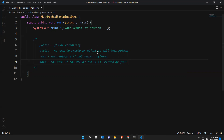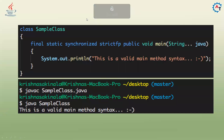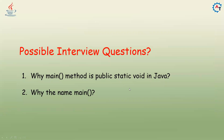Possible interview questions from this topic: why is the main method public static void main? We've discussed all these reasons. Why is the name 'main'? It is predefined by Java — you cannot change it; if you do, you'll get an error. That's all about the main method. Thanks for watching.